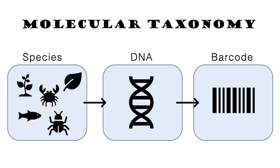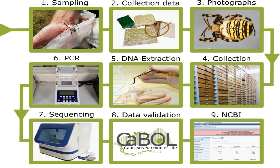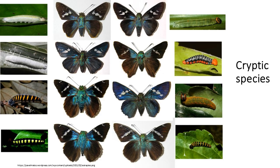Molecular taxonomy uses genetic information such as DNA sequences to classify insects. Techniques like DNA barcoding, where a short genetic sequence from a standardized region of the genome is used to identify the species, have revolutionized insect taxonomy. This approach is particularly useful for identifying species with similar morphological features and for uncovering their evolutionary relationships.